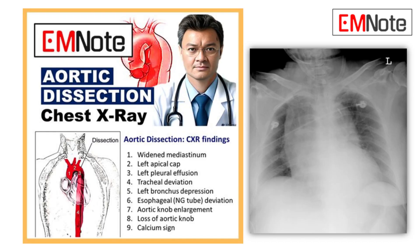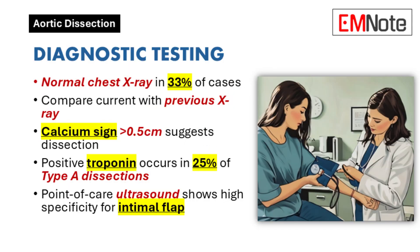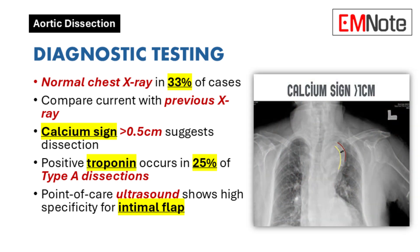Beyond the classic widened mediastinum on chest X-ray, a normal chest X-ray does not rule out dissection. Compare current films to old ones and look for subtle signs like loss of the aortic knob contour, or the calcium sign. The calcium sign: measure the distance from the white calcium line within the aortic knob to the outer edge — greater than 5 mm is a positive calcium sign, and greater than 1 cm is even more suspicious.